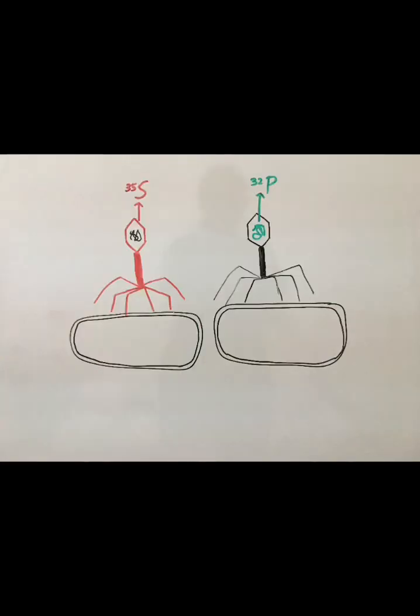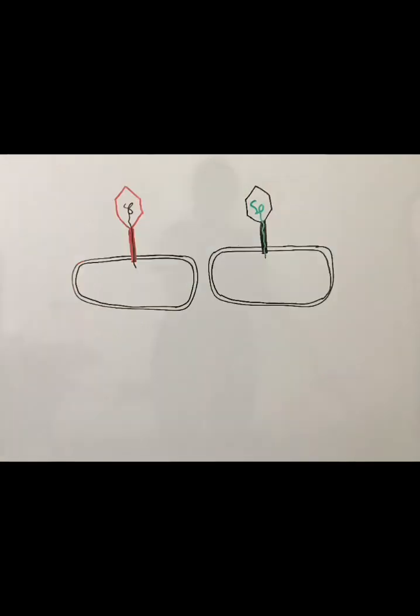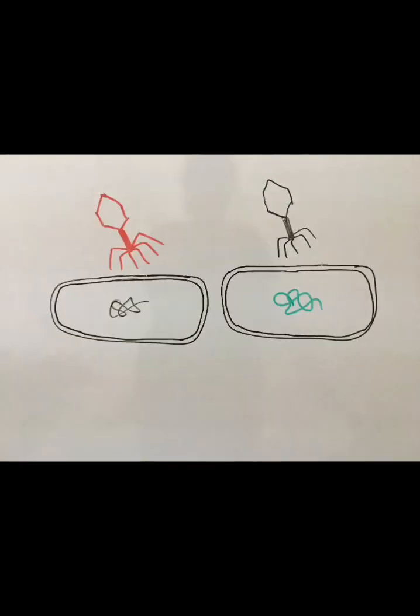The viruses were then allowed to infect bacterium, E. coli. Radioactive sulfur remained outside the cell, whereas radioactive phosphorus entered the cell.